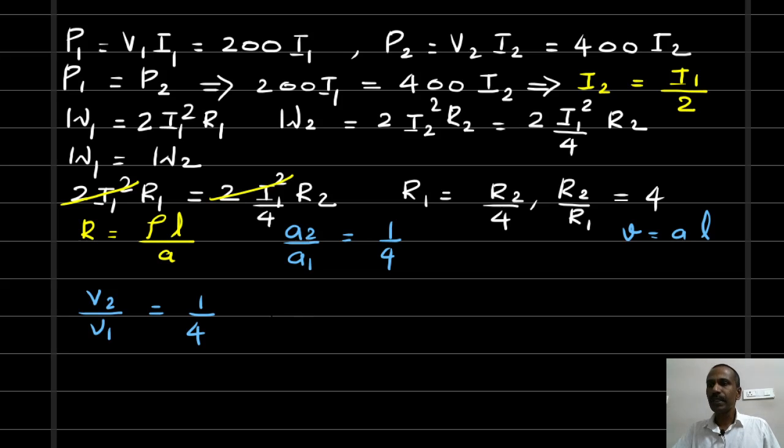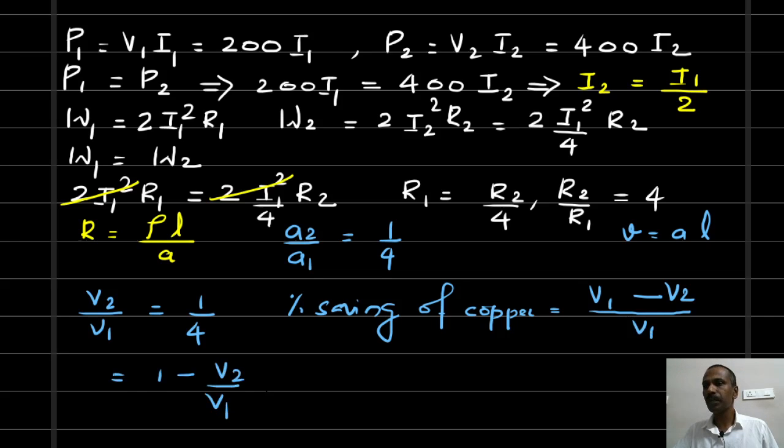The percentage saving of copper equals V1 minus V2 divided by V1, which is equal to 1 minus 1 by 4. This is equal to 0.75, or the saving of copper equals 75 percentage.